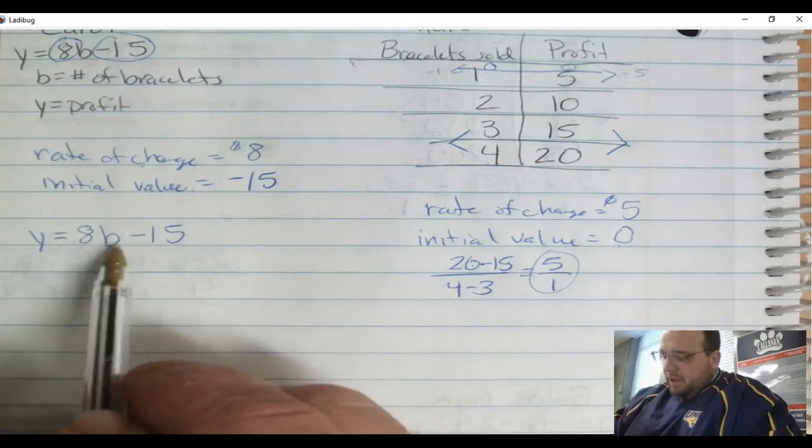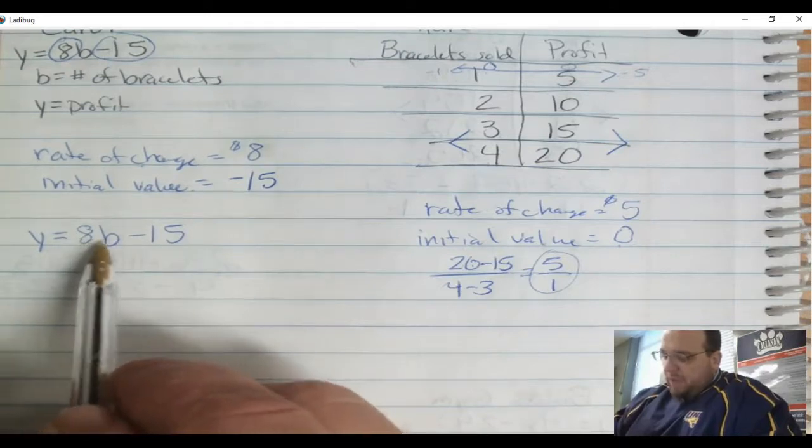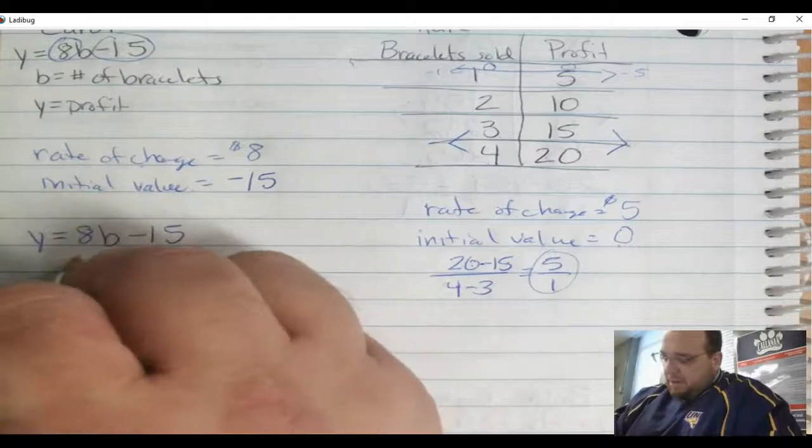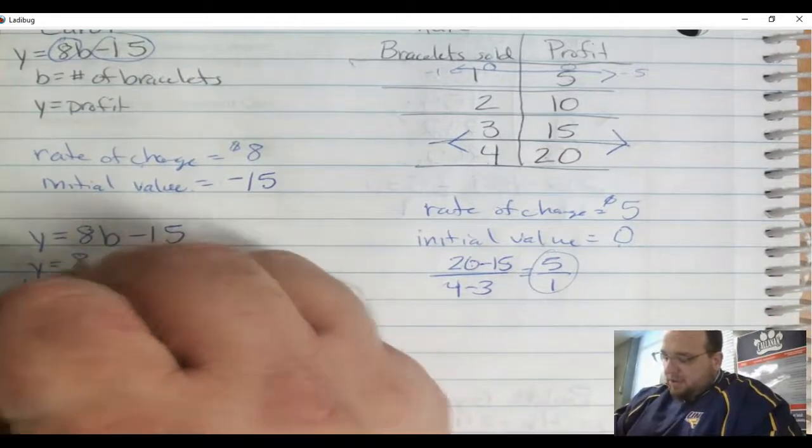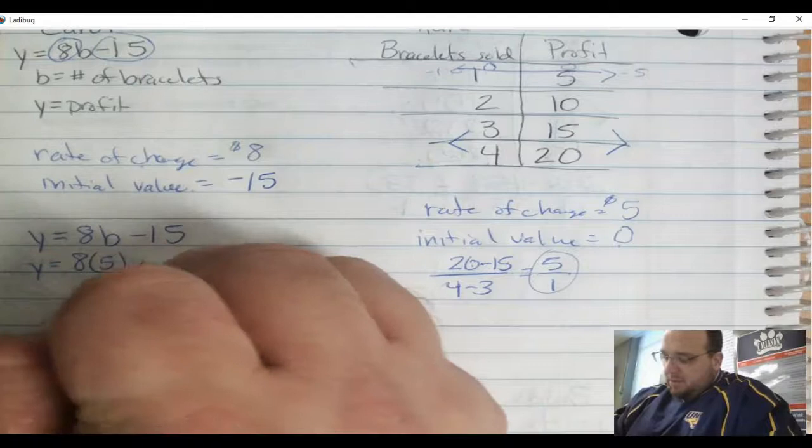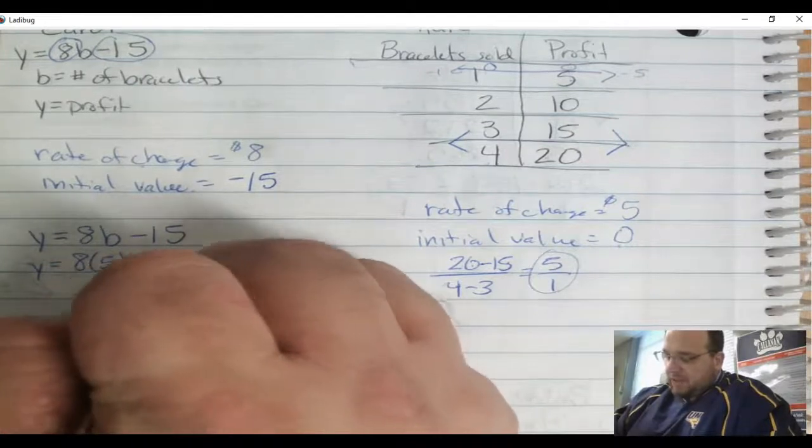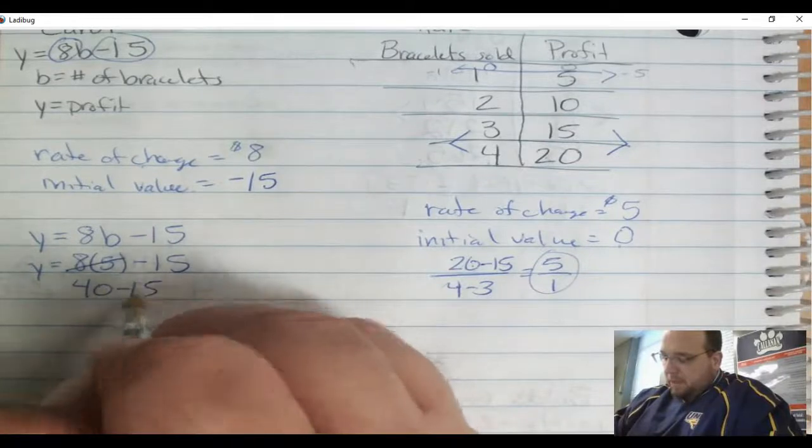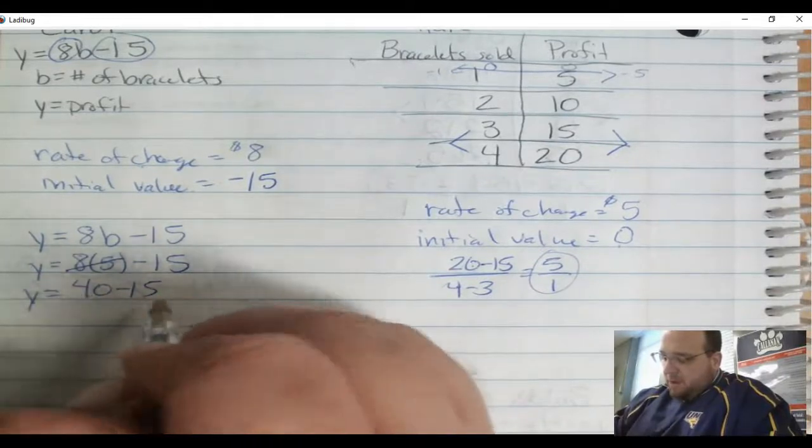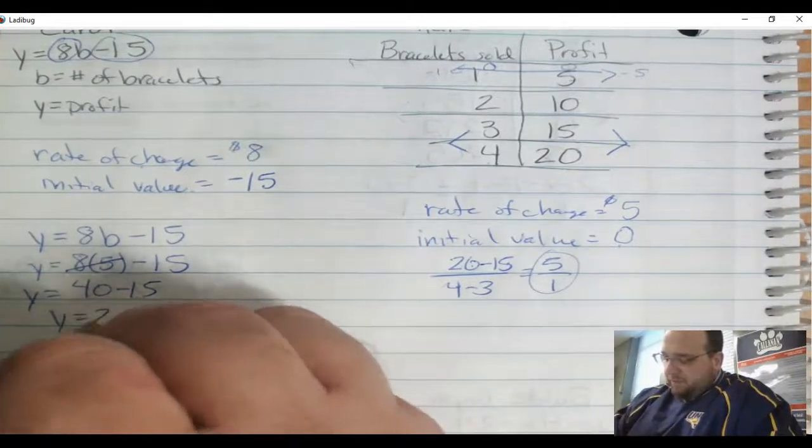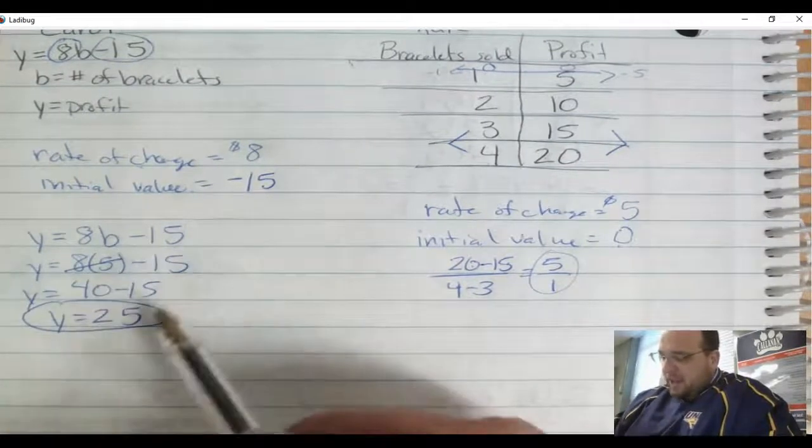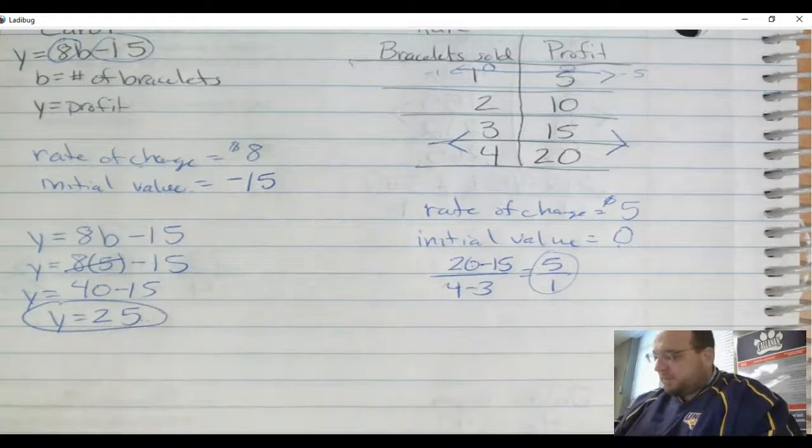Over here I have y equals 8b minus 15. I'm going to put a 5 in for b because that's the number of bracelets. So I'm going to have y equals 8 times 5 minus 15. 8 times 5 is 40. Y equals 40 minus 15, which is 25. So after 5 bracelets, I see that Carol makes $25.